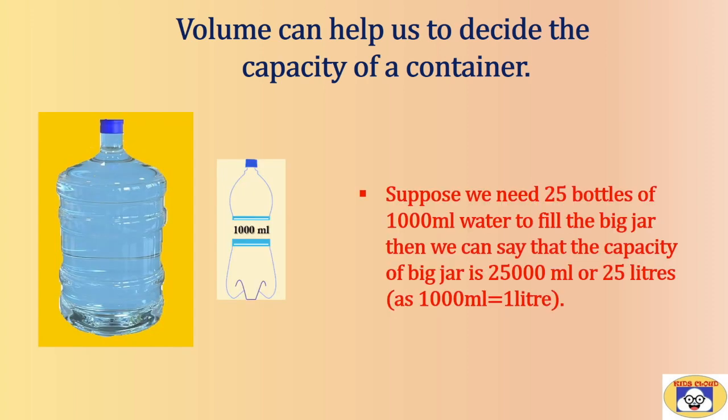Here are one big container and a water bottle having a capacity of 1000 ml. Suppose we need 25 bottles of 1000 ml water to fill the big jar, then we can say that the capacity of big jar is 25,000 ml or 25 liters, as 1000 ml equals 1 liter.